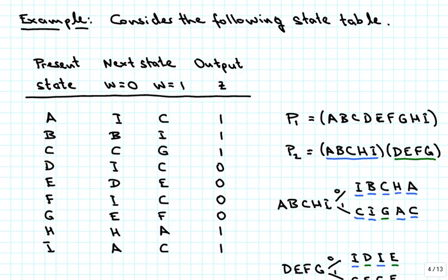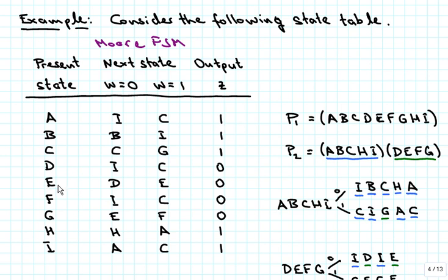Here is an example of a Mealy finite state machine. We have 9 states initially: A, B, C, D, E, F, G, H, and I, with a binary input where W equals 0 or W equals 1. From state A, for example, we go to state I if W equals 0, to state C if W equals 1, and state A produces an output of 1. Similarly, in state E, if W equals 0 we go to state D, if W equals 1 we stay in state E, and state E produces output C equal to 0.